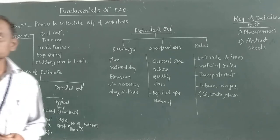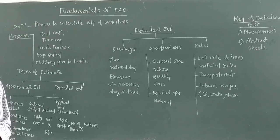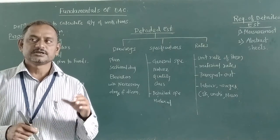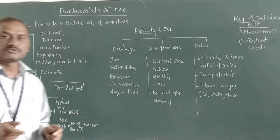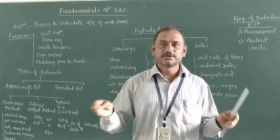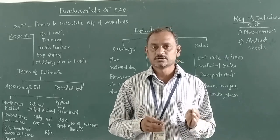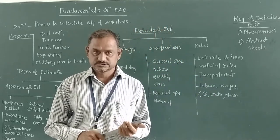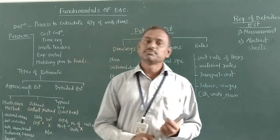What is an approximate estimate? Approximate estimate is a type of estimate in which we find the cost of an item in a specific or short time duration. That is called approximate estimate. In the plinth area method, we calculate the estimate for a building based on the covered plinth area — that is, the area covered with the terrace, covered balconies, covered galleries, or covered orchards.